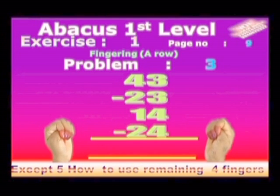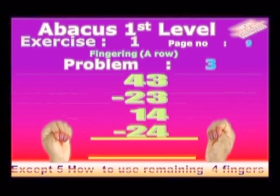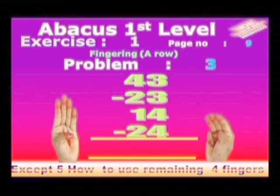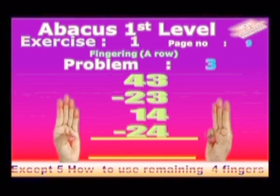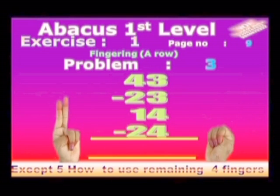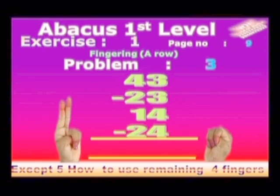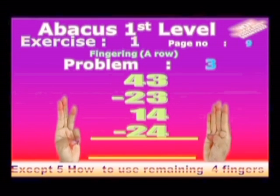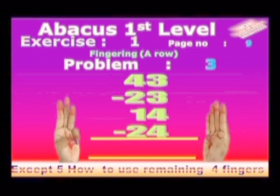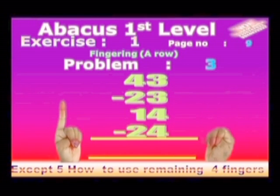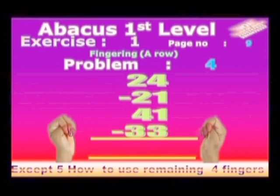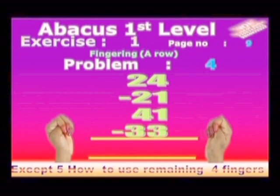Problem no. 3. Take 43: 4 in left hand, 3 in right hand. Minus 23: 2 in left hand, 3 in right hand. Add 14: 1 in left hand, 4 in right hand. Minus 24: 2 in left hand, 4 in right hand. Answer is 10.